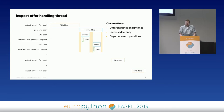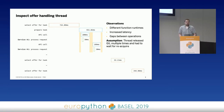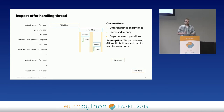We started to assume — we are using threads, so it must be the Global Interpreter Lock. We are hitting the GIL. There's contention and that's our bottleneck.